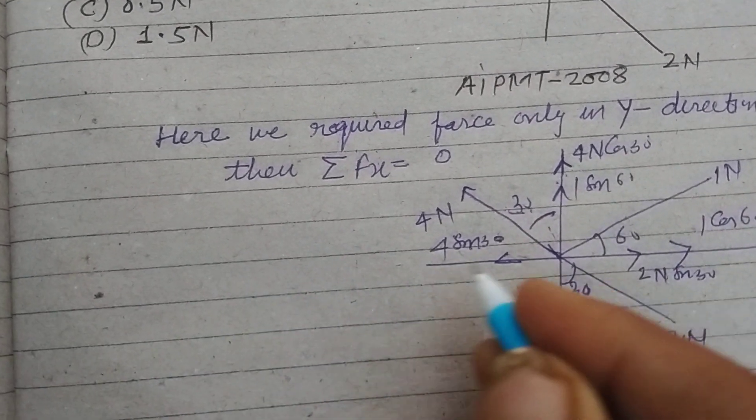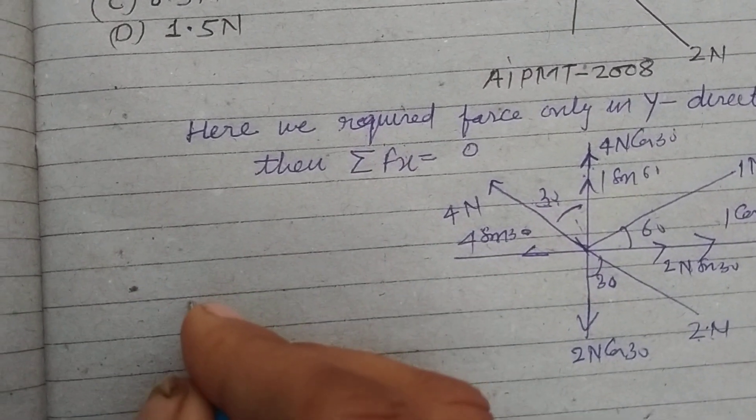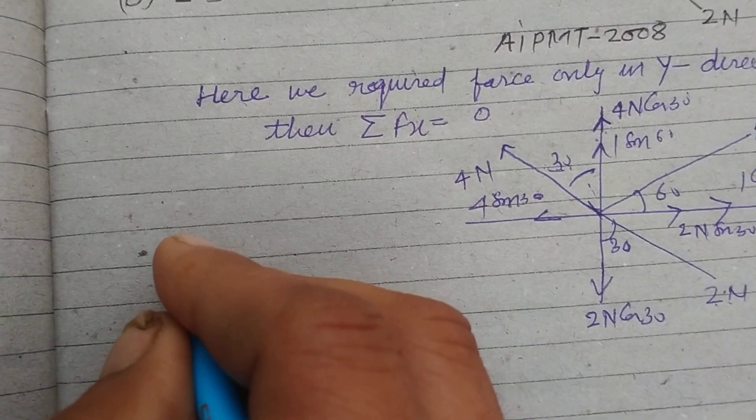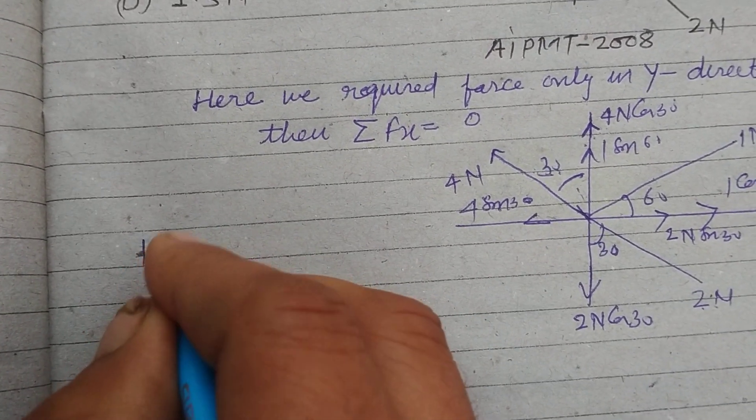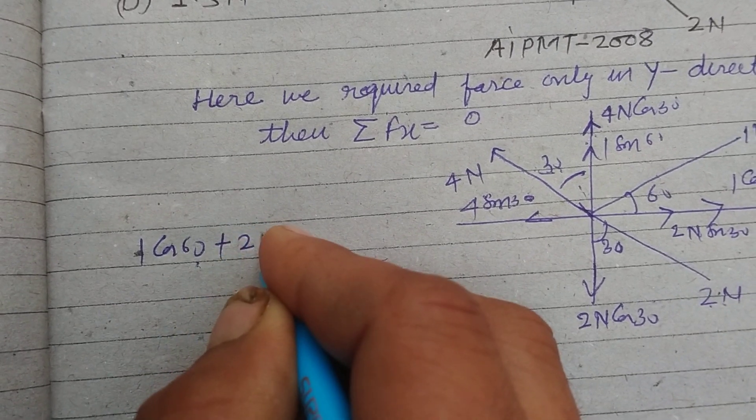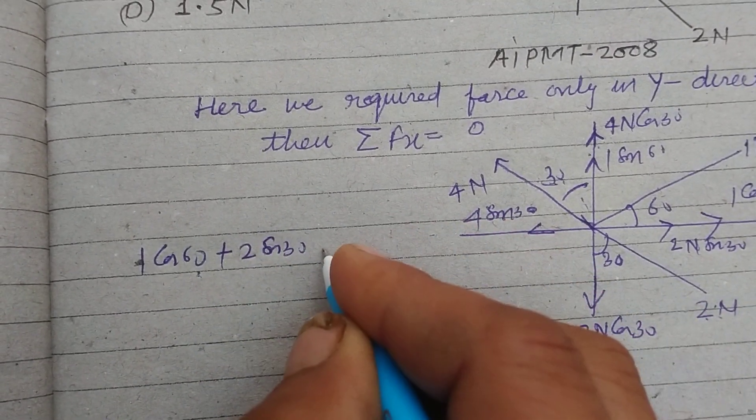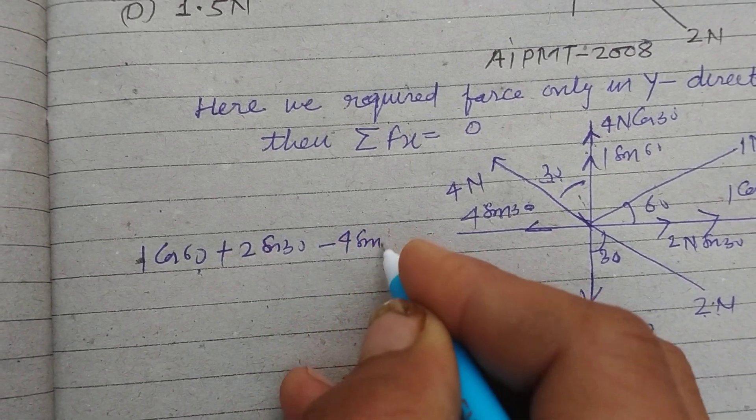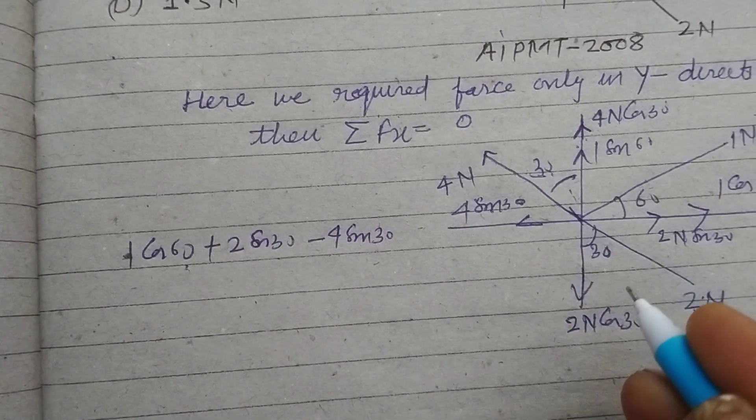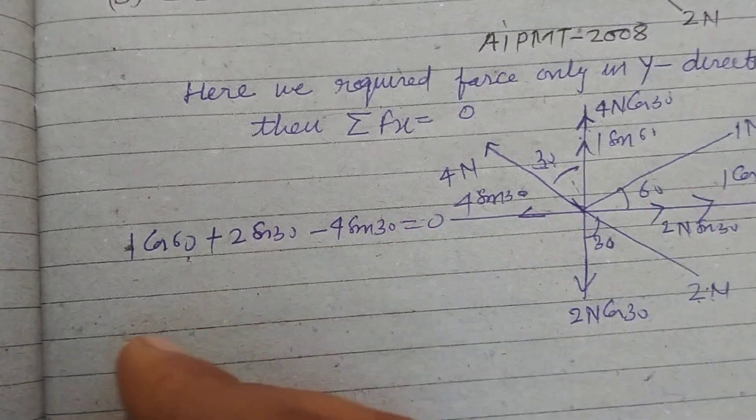So the total components in X direction are 1 cos 60 plus 2 sin 30 minus 4 sin 30 equal to zero.